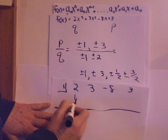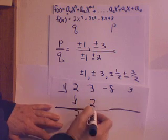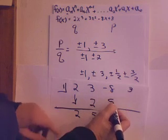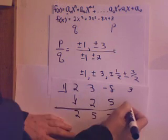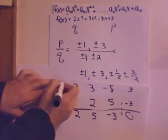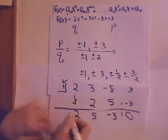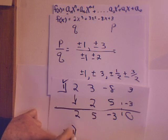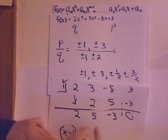Bring down the 2. 1 times 2 is 2. 2 and 3 is 5. 1 times 5 is 5. Negative 8 and 5 is negative 3. 1 times negative 3 is negative 3. I got a 0. That means 1 is a factor. So, I have one answer. That means that x minus 1 divides into this polynomial, and 1 is one of the answers.